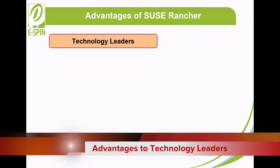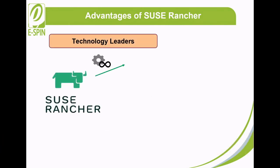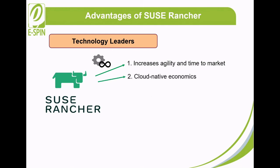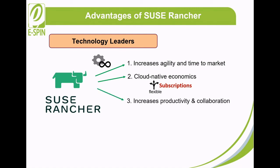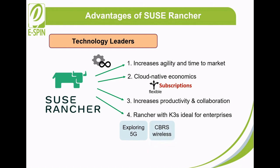For technology leaders, SUSE Rancher promotes DevOps transformation by increasing team agility and accelerates the time to market of services to meet customer demands. SUSE Rancher offers cloud-native economics through flexible subscriptions according to your cloud-native infrastructure and business needs. SUSE Rancher increases productivity and collaboration by providing Kubernetes clusters that are consistent across environments, allowing teams to collaborate more efficiently. SUSE Rancher with Lightweight Kubernetes is also ideal for enterprises exploring 5G, CBRS wireless, big data, artificial intelligence, and machine learning use cases.